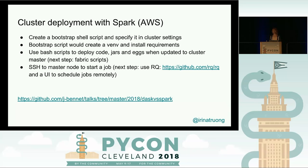Cluster deployment with Spark in AWS: you create a bootstrap shell script and specify it in cluster settings. When the cluster spins up, the bootstrap script creates your virtualenv and installs all requirements. You then write custom scripts to deploy your code, jars, and eggs to the cluster master. To start a job by hand you SSH to the master node, or you can use a scheduler or task queue like RQ to schedule jobs remotely. I have an example of this full setup in my repo.